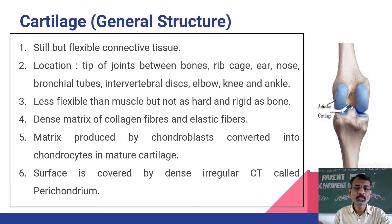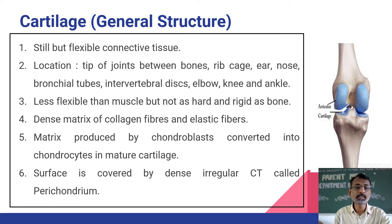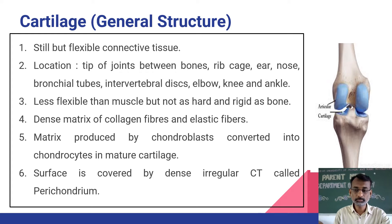Cartilage is a firm structure but it is flexible and it is also connective tissue. Bone is also connective tissue, but cartilage is flexible compared with bones. Where is it located? It is located at the tip of the joints between the bones — like this, at the tip of the joint and between two bones.